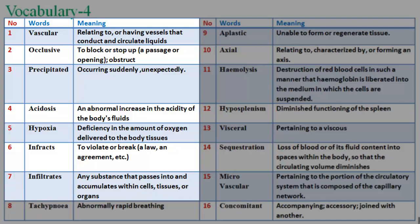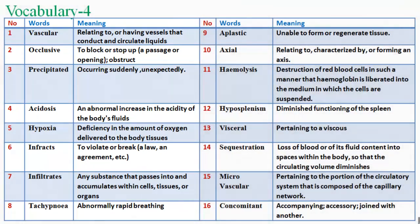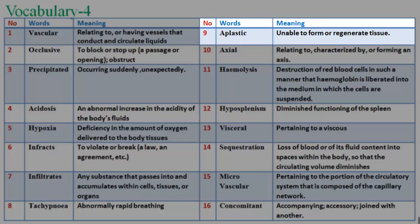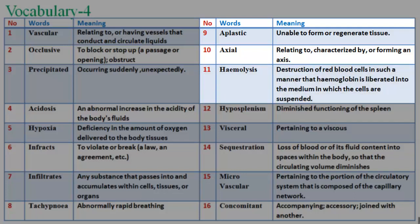36. Infarct: to violate or break; a law and agreement. 37. Infiltrates: any substance that passes into and accumulates within cells, tissues, or organs. 38. Tachypnea: abnormally rapid breathing. 39. Aplastic: unable to form or regenerate tissue. 40. Axial: relating to, characterized by, or forming an axis. 41. Hemolysis: destruction of red blood cells in such a manner that hemoglobin is liberated into the medium in which the cells are suspended.